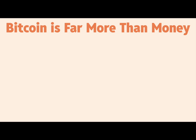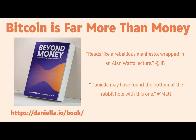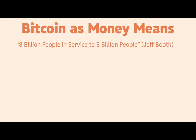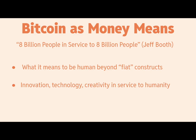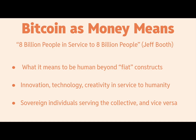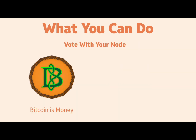Bitcoin is far more than money. When you're really far down the Bitcoin rabbit hole you can't not see it as more than money. I recently wrote a book called 'Beyond Money: Regaining Sovereignty, Rediscovering Humanity' — Jeff Booth graciously provided the foreword. It's at the crossroads of Bitcoin and spirituality, because money touches everything in our lives. Jeff often mentions Bitcoin as money meaning 'eight billion people in service to eight billion people.' For me it entails discovering what it means to be human beyond fiat constructs — innovation, technology, creativity, and service to humanity.